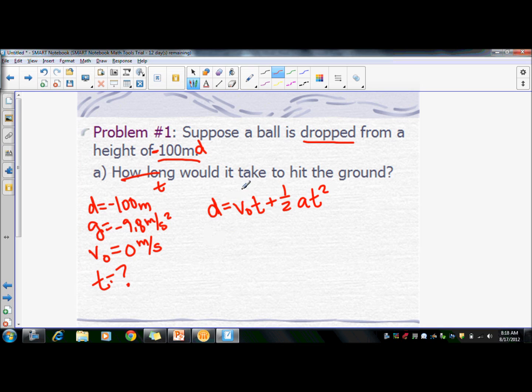That would be d equals v naught t plus one-half at squared. So v naught is zero, and so zero times anything is still zero, so this drops out. And so we can get a revised d equals one-half at squared. I only did that because that initial velocity is zero.